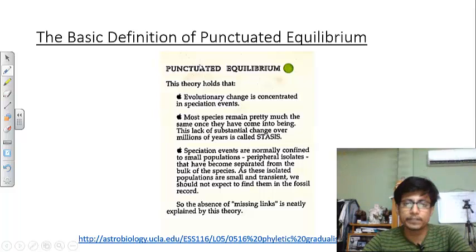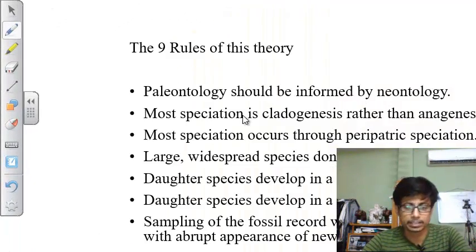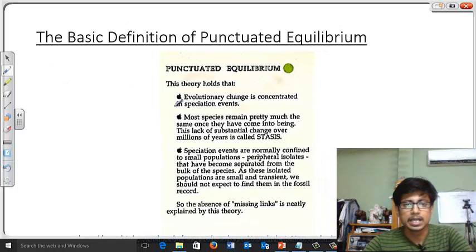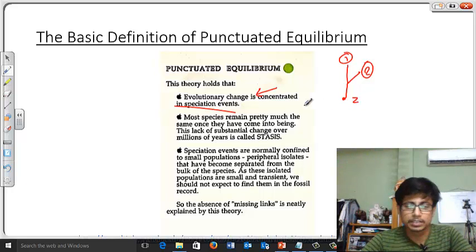This is the basic definition for punctuated equilibrium. This theory holds that evolutionary change is concentrated in speciation events. And that is true because whatever speciation we observe and see, that is linked with punctuated equilibrium because it produces different species from one ancestor. Species one, species two, both prepared from species Z here. So this is the theory.